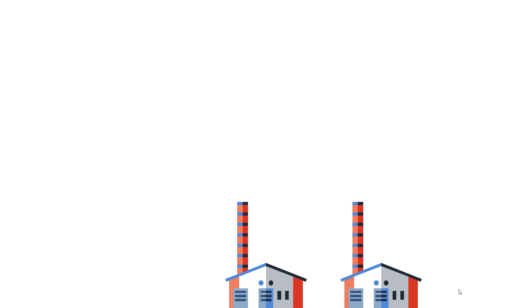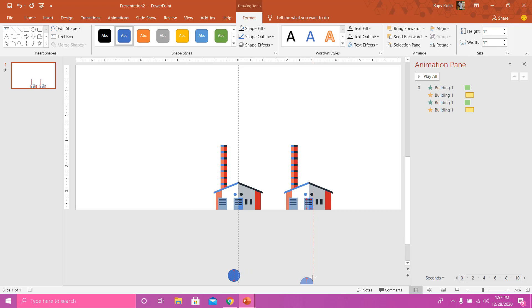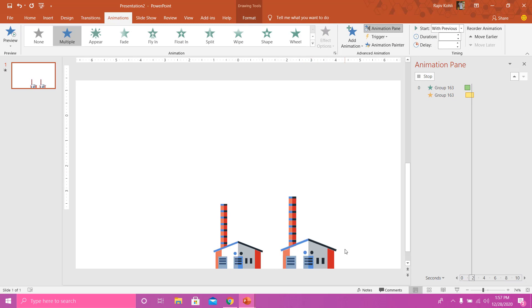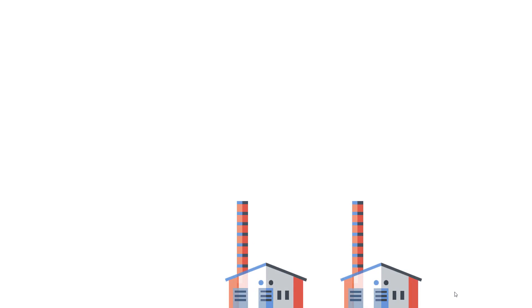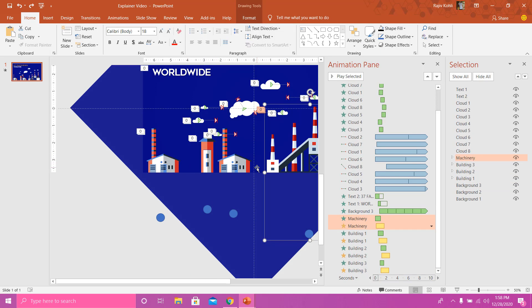If you want to define a custom anchor point, you can draw any object — let's say an oval — reduce its size, and move it to the desired position. Select both the building and the oval while holding Shift and group them. The anchor point will now change to that position. If you move the oval, the anchor point changes too. Using Animation Painter to replicate the animation, you can see the building pops from that specific point — for example, right from the bottom.